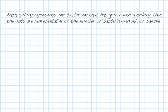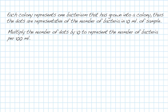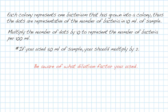Thus, the dots are representative of the number of bacteria in 10 mils of sample. Multiply by 10 to report coliform counts as number of bacteria per 100 mils. If you used 50 mils of sample, then you should multiply by 2 to report coliform counts as number of bacteria per 100 mil. Be aware of what dilution factor you use.